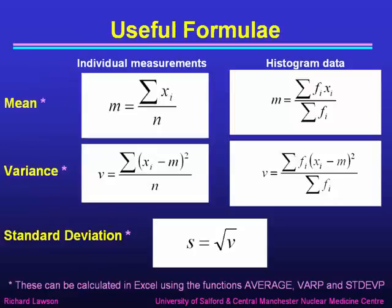That recipe was summarized here by this formula, which shows how to calculate the mean from the individual measurements by summing all the measurements and dividing by n, or from the histogram data by summing the frequency times the measurements and dividing by the sum of the frequency.